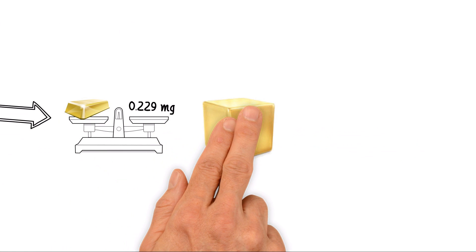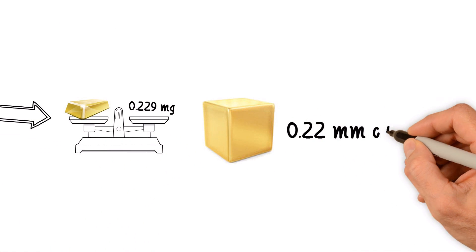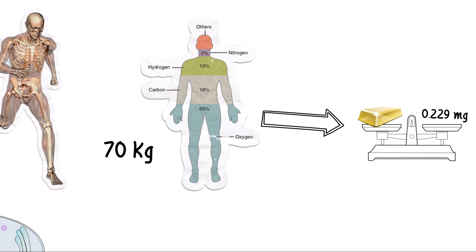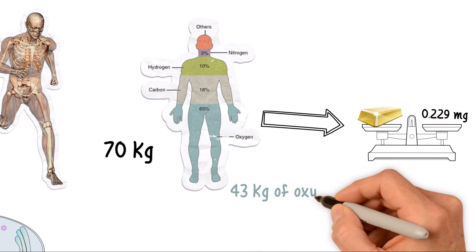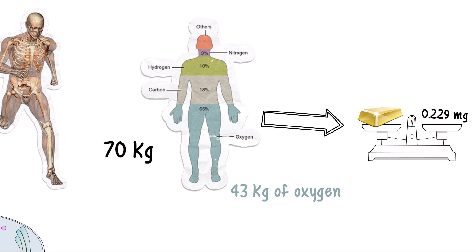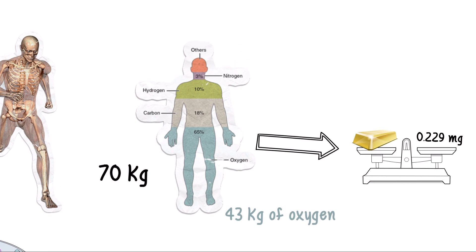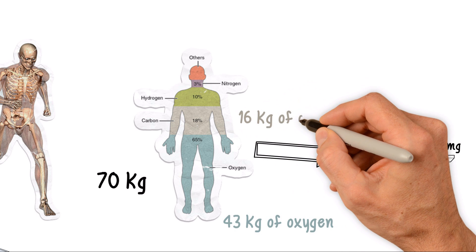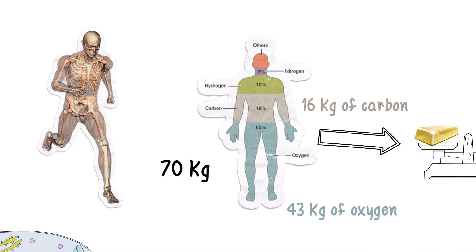This would form a cube approximately 0.22 mm along each side. The human body contains 43 kg of oxygen, the most abundant element in the earth as well as the human body. Other elements found in the human body include 16 kg of carbon and 7 kg of hydrogen.